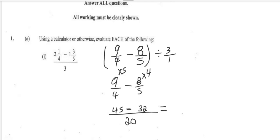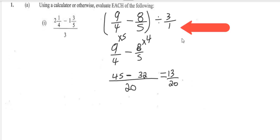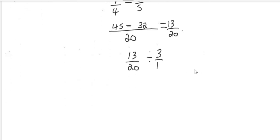And this is equal to 45 minus 32, which is 13 over 20. From here we're going to bring back down the division sign and the 3 over 1. So now we're going to have 13 over 20 divide by 3 over 1. Now in fractions you cannot divide, so we're going to change the sign to multiplication.